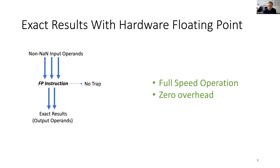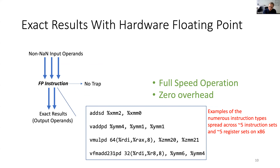There are basically three cases. The first case is that we aren't involved at all: you have a floating point instruction with non-NAN input operands and it can produce an exact result. In this case, the hardware does not produce a trap and the instruction executes at full speed — there is zero overhead. We work at the level of these instructions that x86 has across its five different instruction sets for floating point, which actually implement the floating point primitives.